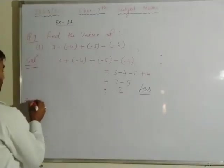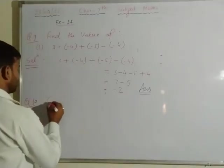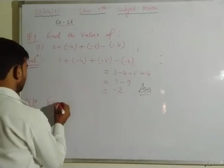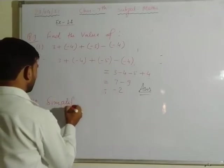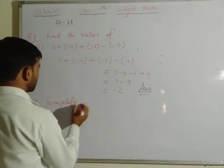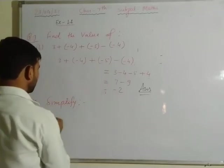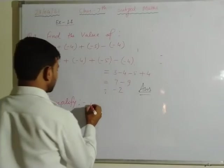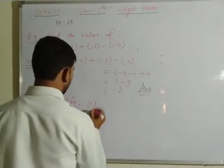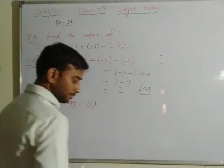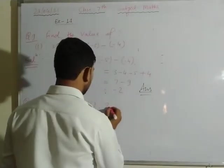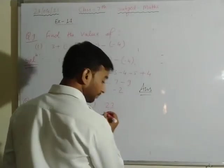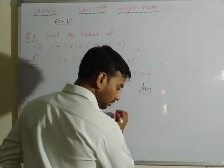Question number 10: simplify. First part: 23 minus minus 9 plus 12 minus minus 6.